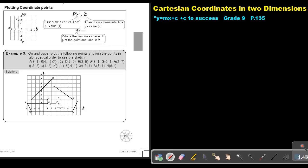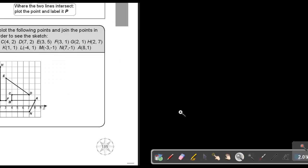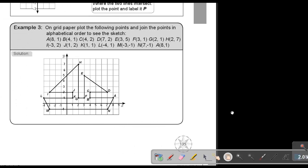Let's go through the following points. I'm just going to make it a little bit bigger to see better. The first one, A was 8 and 1. B was 4 and 1. C was 4 and 2. D was 7 and 2. E was 3 and 1. F was 3 and 1. G was 2 and 1.